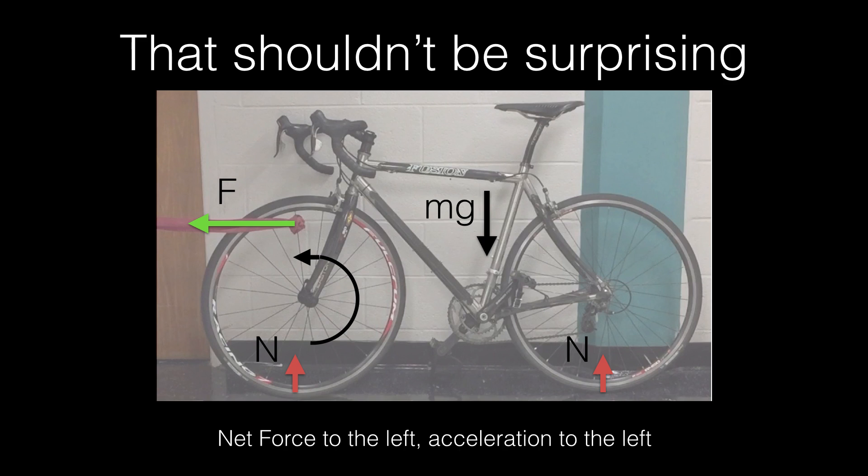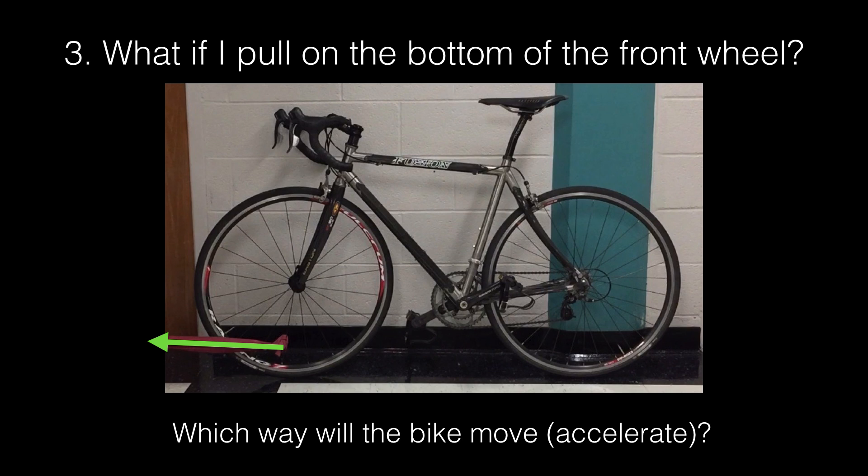Next and final question. What if I pull on the bottom of the wheel? Which way will the bike accelerate? So remember the wheel wants to rotate one way, but I'm pulling in the opposite way that it wants to rotate. So roll backwards or forwards?